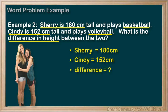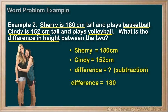Step 3: Strategize and solve. Now, 'difference' — we remember that difference is a term indicating subtraction. So the difference between their heights involves subtraction. The tallest one, 180 centimeters, minus the shorter one, 152 centimeters, and we work that out to 28 centimeters.